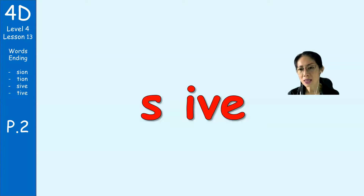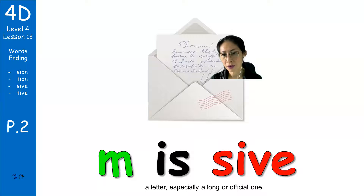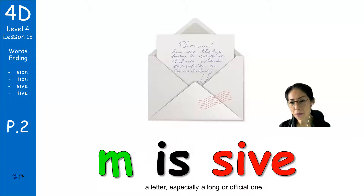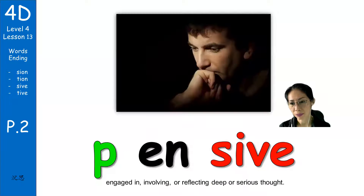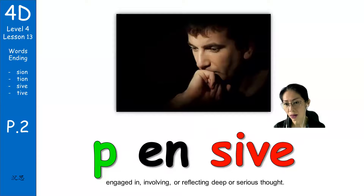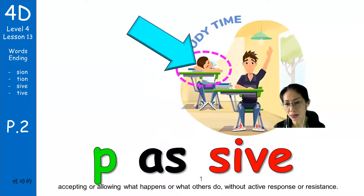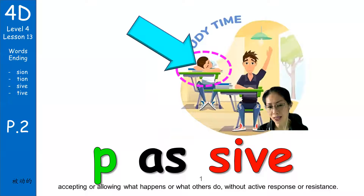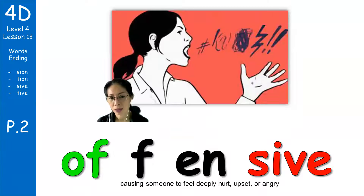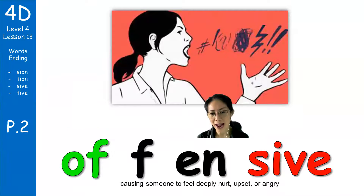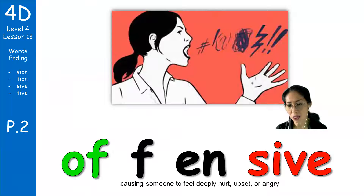Missive — S-I-F. Pensive: in a pensive mood, thinking alone quietly. Passive: not active, not attentive — passive. Offensive: words or speech that make people unhappy, make people sad — that is offensive.